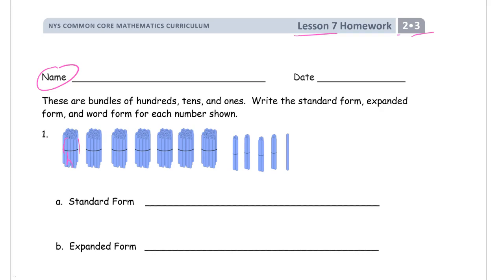These skinny bundles here are tens, and these are just single craft sticks - these are just the single ones. Hundreds, tens, and ones. Write the standard form, which is just a plain number, expanded form, which is an equation, and word form, which is all words for each number shown.